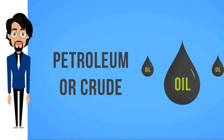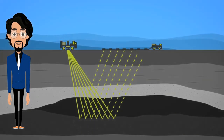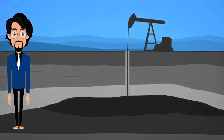Oil, otherwise known as petroleum or crude oil, is a thick black liquid composed primarily of hydrogen and carbon. Oil also contains trace elements of sulfur, nitrogen, and oxygen. Oil is found in specific underground rocks called reservoirs. These rocks have tiny spaces that allow them to hold water, natural gas, or oil. Rocks around the reservoir trap oil in place.